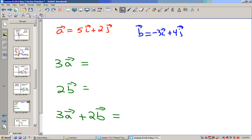Now if we do a little algebra with this. If I have a, find 3a, that's just multiplying each of these by 3. So that would be 15i plus 6j. 2b, I multiply both of those by 2. So this would be negative 6i plus 8j. If I want to find what the vector 3a plus 2b would be, I just add these up. So this would be 9i plus 14j.